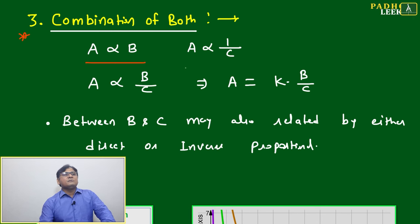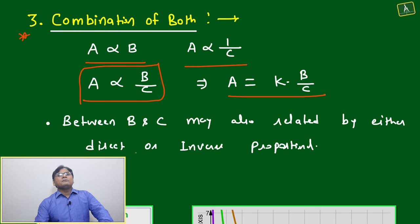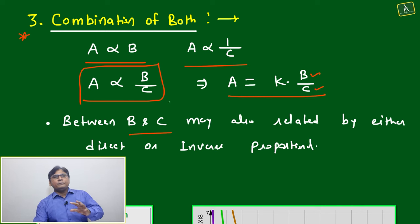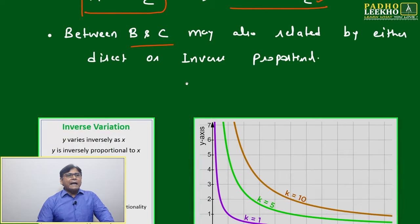This is a good area where questions will be framed—a combination of both direct and inverse proportionality. A is directly proportional to B and inversely proportional to C. Between B and C, these two variables may also be related by either direct or inverse proportionality or some other relation.